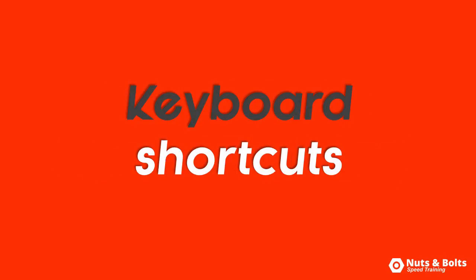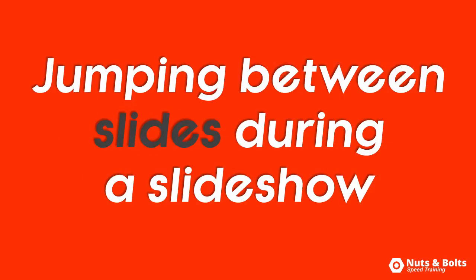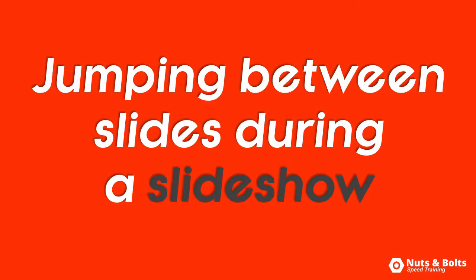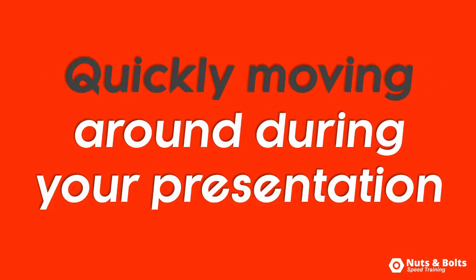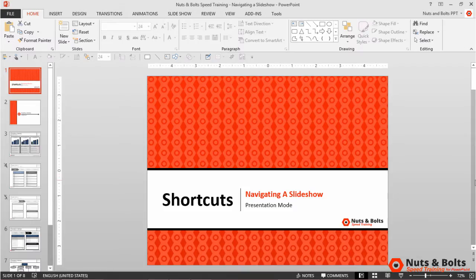This is Nuts and Bolts Speed Training with your keyboard shortcuts for jumping around between the different slides within your presentation in slideshow mode, including hidden slides — which is useful for quickly moving back and forth between your slides during your presentation. Here in PowerPoint, first notice that I have two hidden slides.